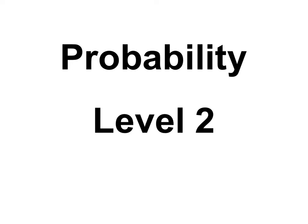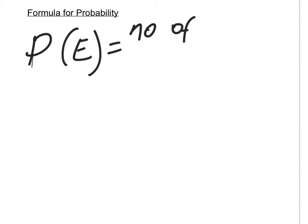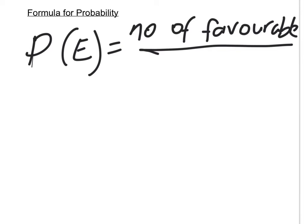First of all, let's talk about what probability means. There's a formula: the probability of an event is equal to the number of favorable outcomes — the number of things that could happen that we want — over the total number of outcomes.